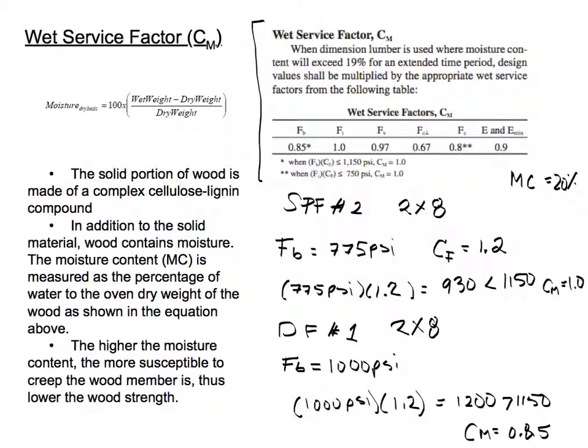We have a little star here, we have to see what that means. It says that when the bending stress times the size factor is less than 1,150 psi, then the wet service factor would be 1.0.